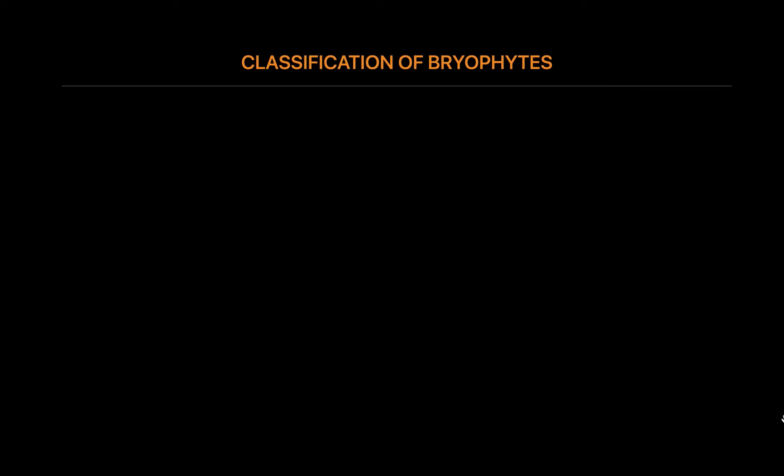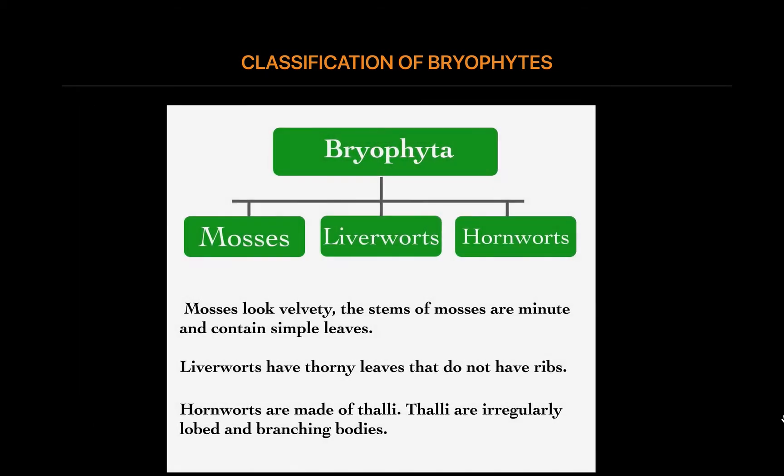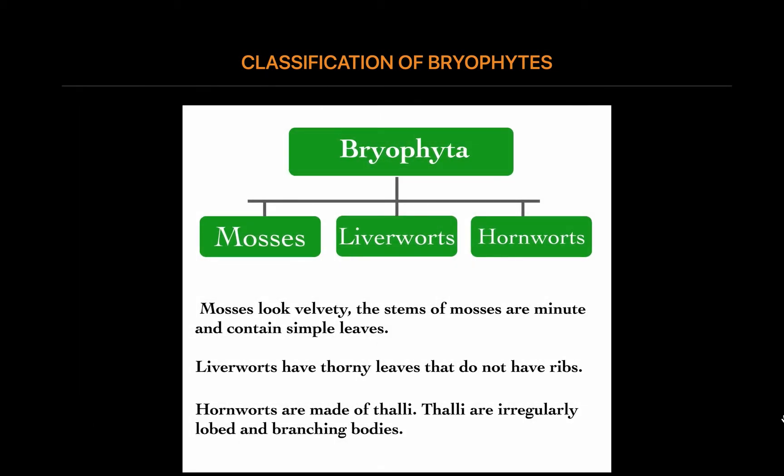Classification of bryophytes: Bryophyta is divided into three classes — Mosses (class Bryopsida), Liverworts (class Marchantiopsida), and Hornworts (class Anthocerotopsida).